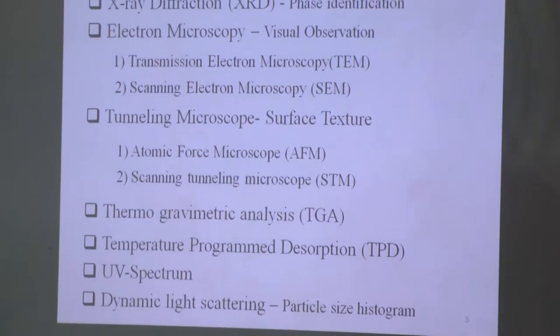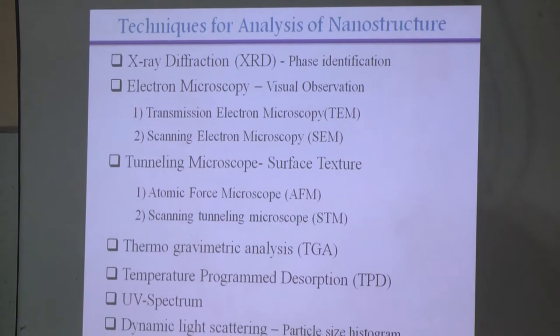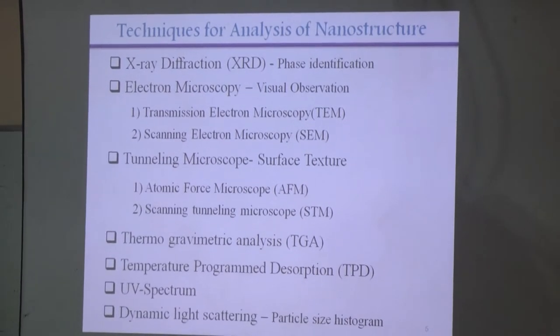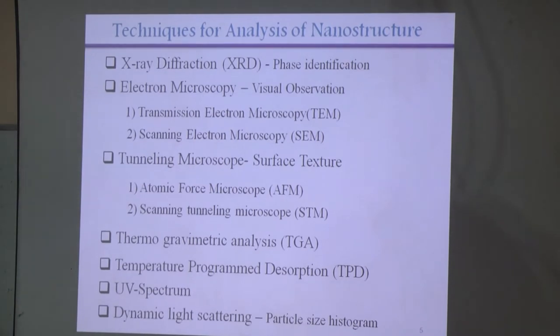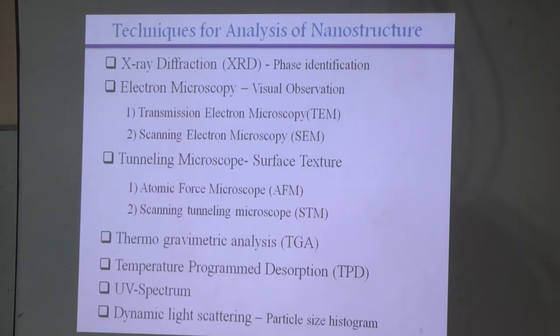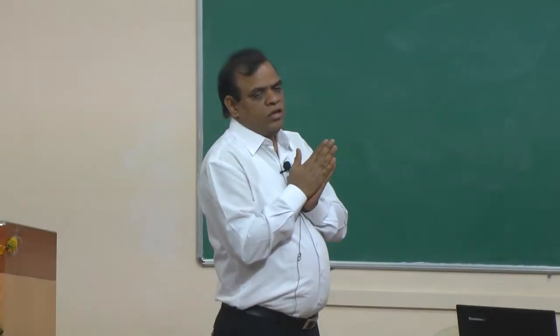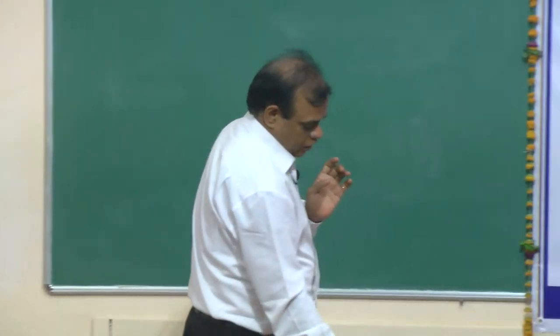Electron microscopy allows us to visually see nanomaterials. After 1980, when SEM and TEM developments took place, we can now see them. TEM has resolution levels in the nanometer range while SEM can reach 100 nanometers. Scanning tunneling microscopes and atomic force microscopes decide surface texture. Thermogravimetric analysis, temperature program desorption, UV spectrum, and dynamic light scattering — which measures particle size histogram — are all useful in establishing the size and shape of nanomaterials.